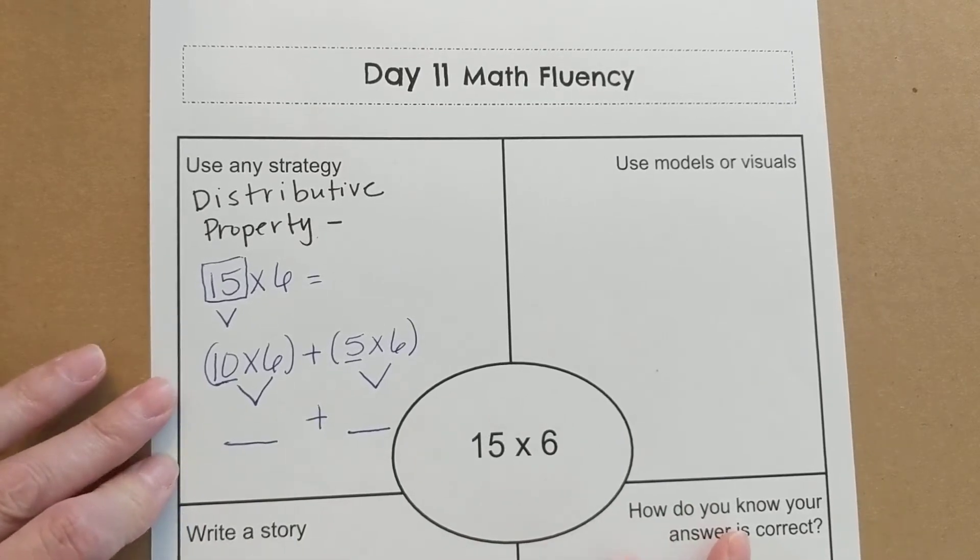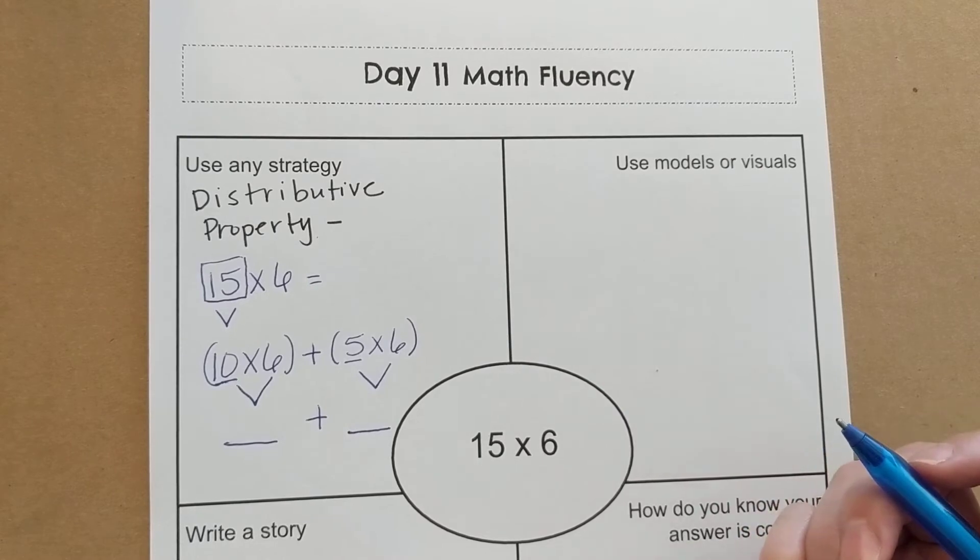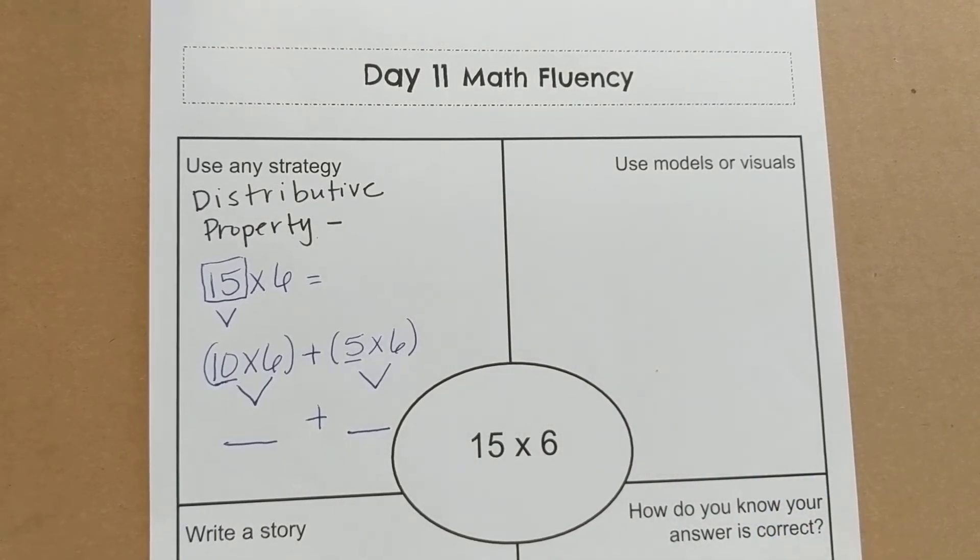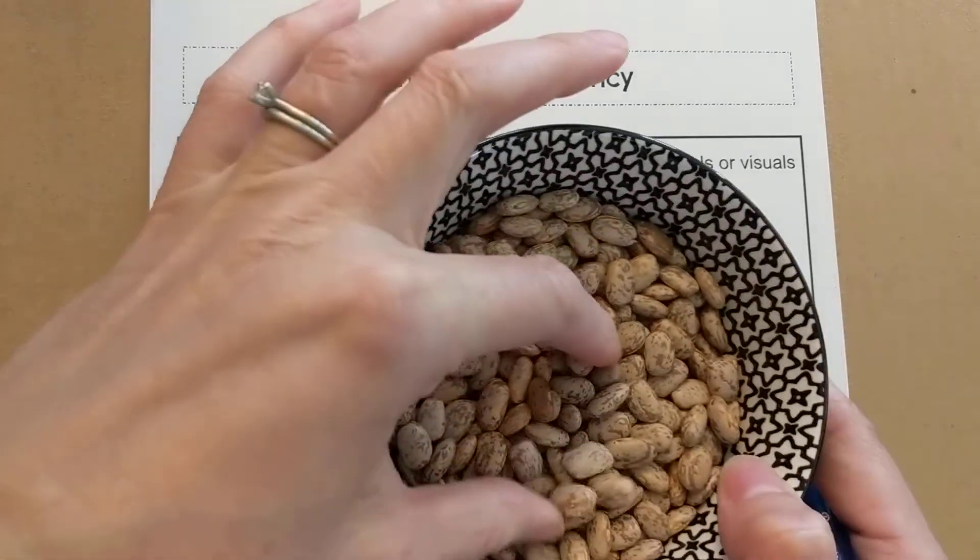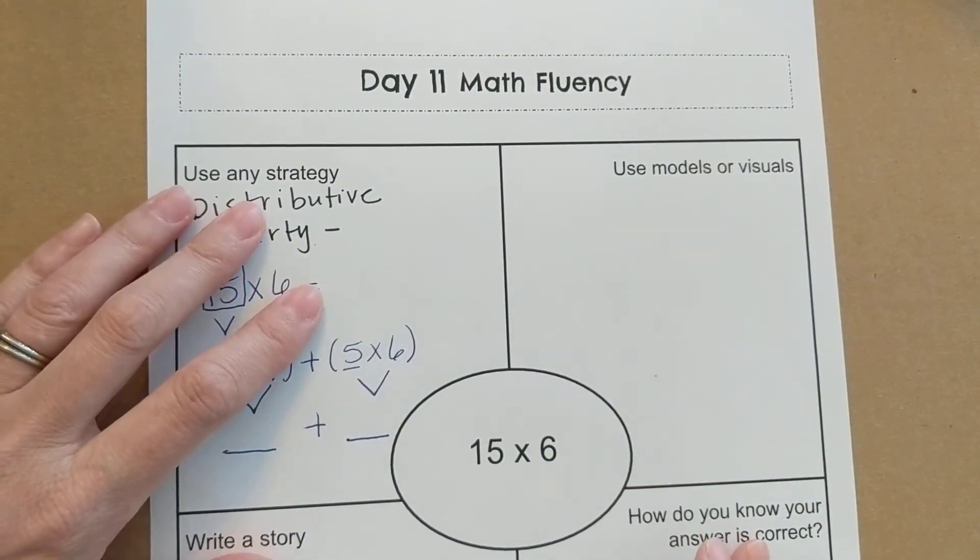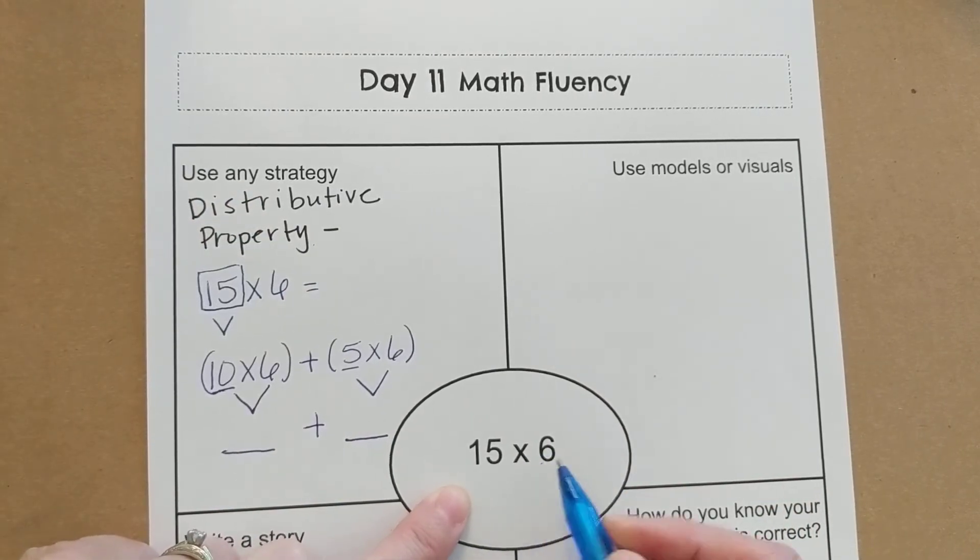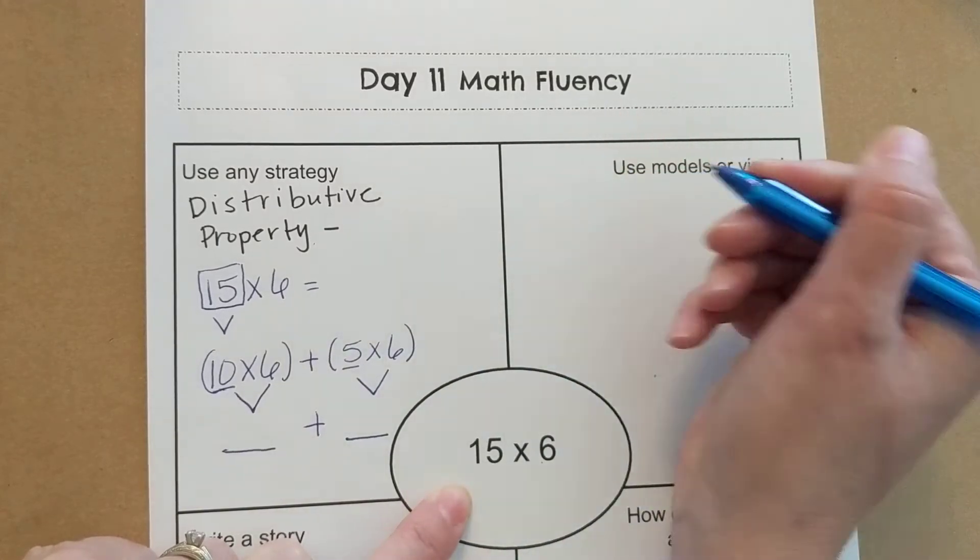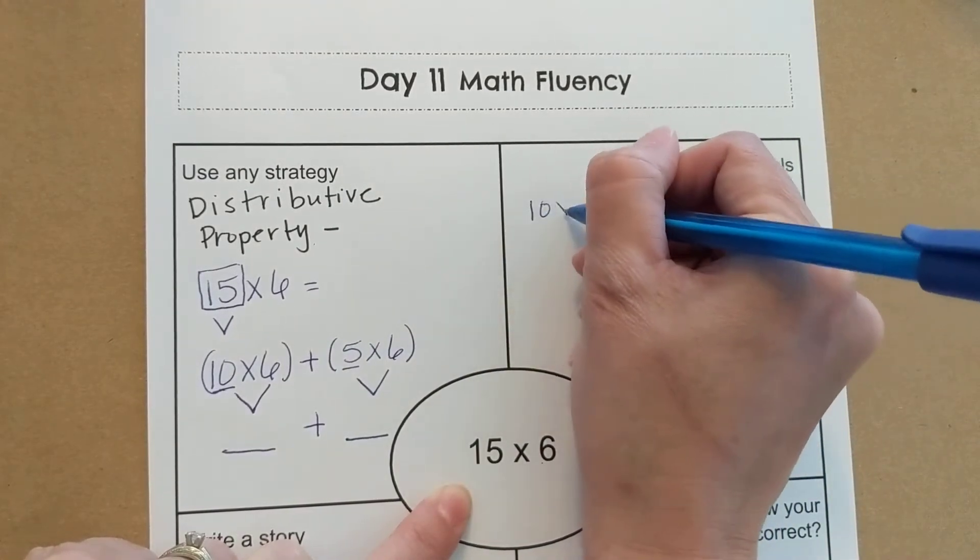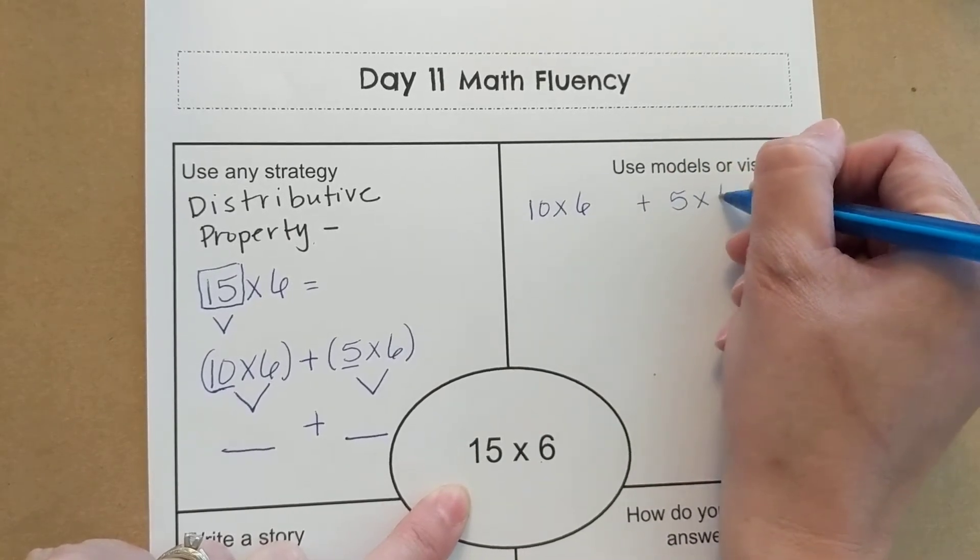You can also use models or visuals. Jory's going to bring me my beans that I forgot. So you could use manipulatives like the pinto beans I've used. I'm going to start, though, with 10s and 1s. So if I took the 15 times 6, and again, using the distributive property, I did 10 times 6 and added that to 5 times 6.